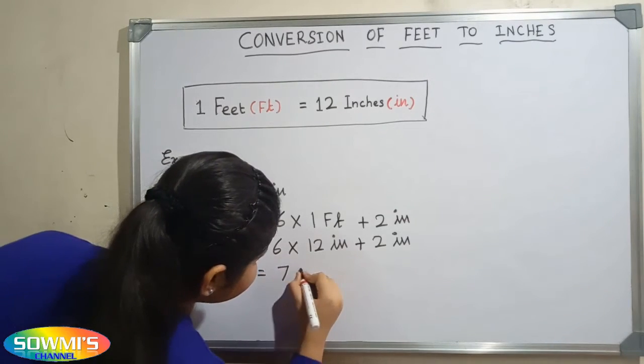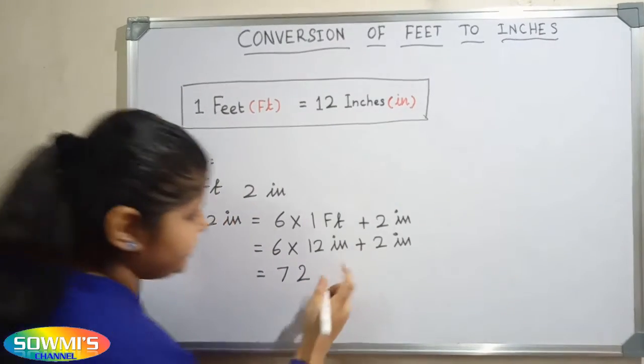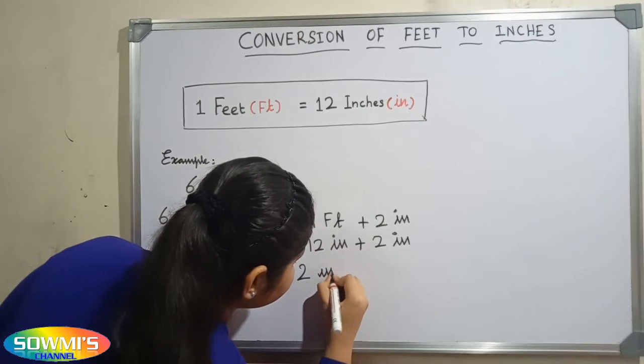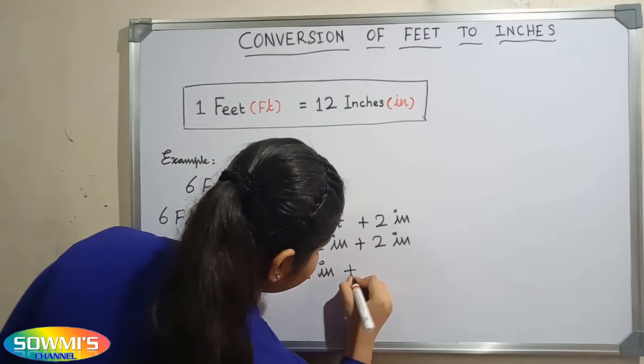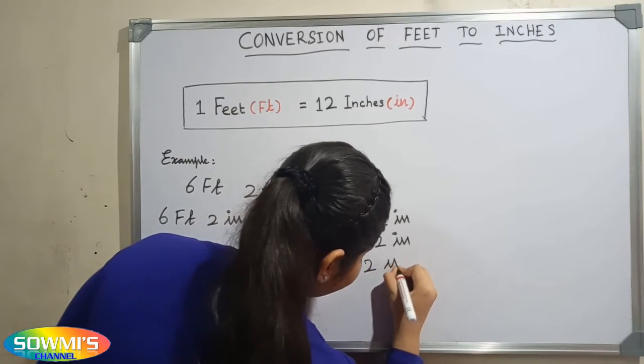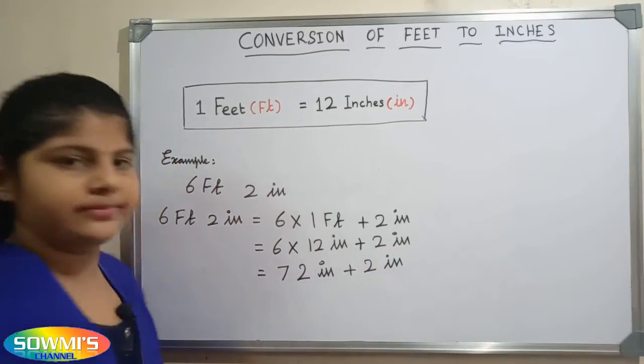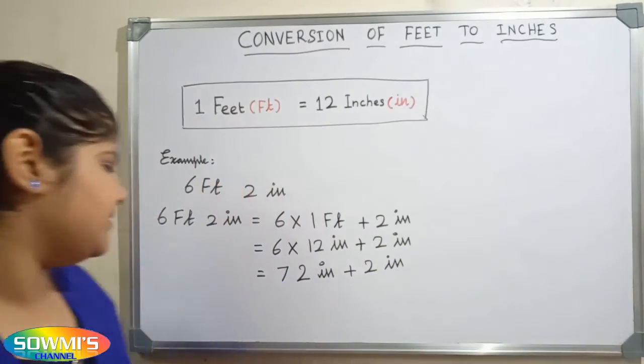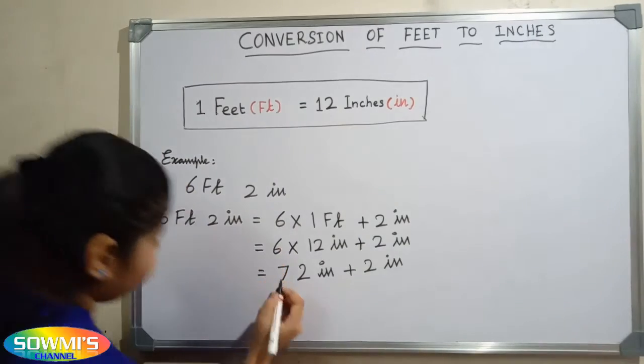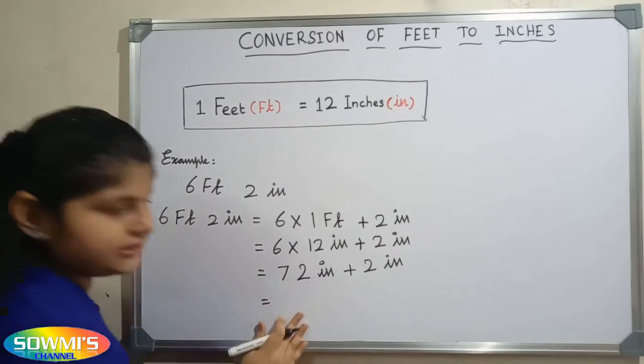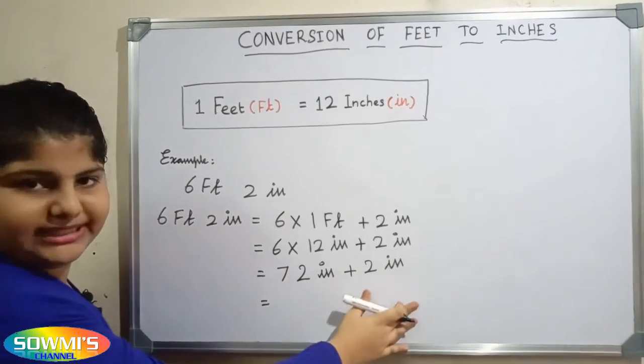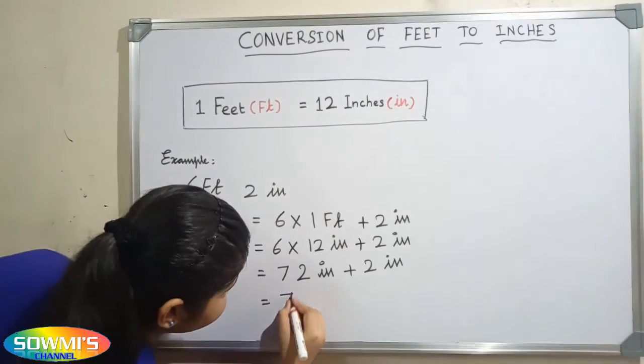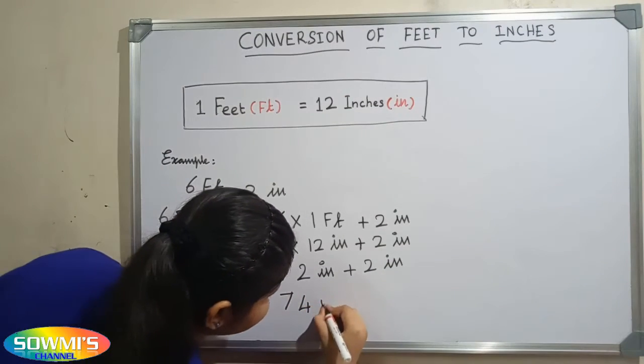So 72 inches plus 2 inches. 72 inches plus 2 inches equals 74 inches.